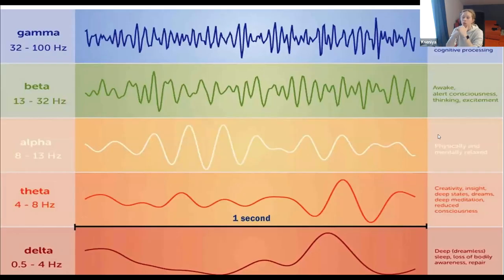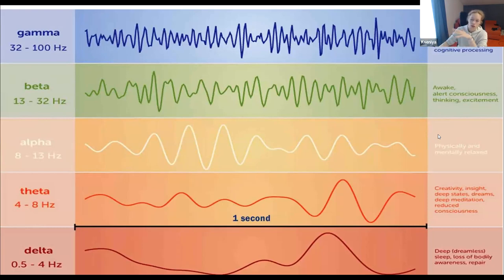Compared to trance, during meditation the gamma range often rises. Delta and theta rhythms are higher in trance, while gamma is more associated with meditation.